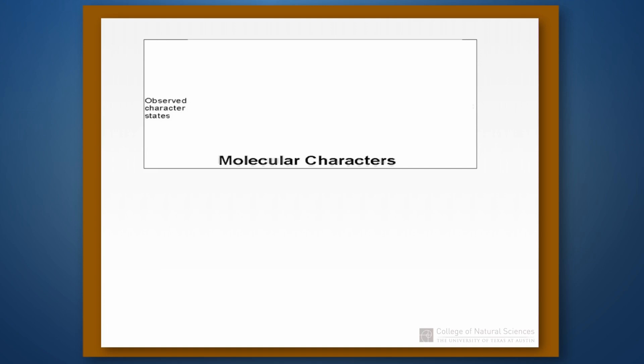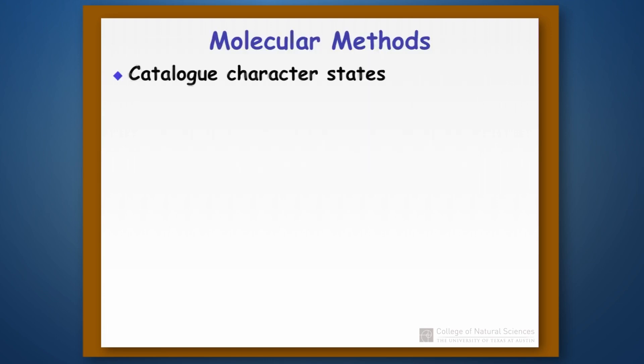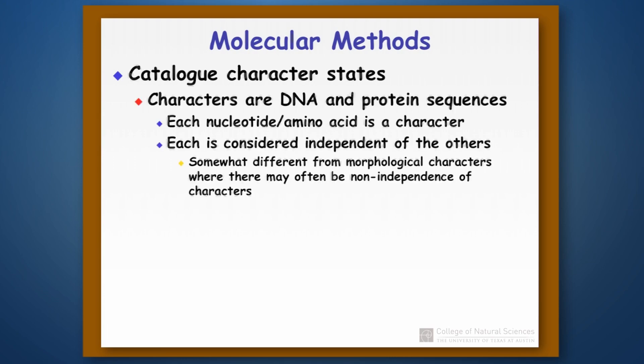Just like with morphological features, we first have to gather our data when we work on molecular characters. The molecular characters we work with are basically DNA and protein sequences. Each nucleotide or amino acid in a protein or DNA sequence is a character, and we consider each one of those bases or amino acids as independent of all the others.